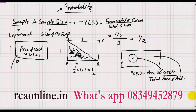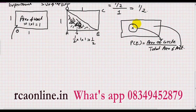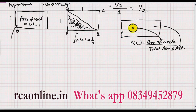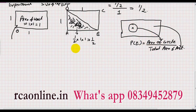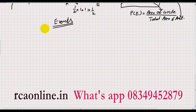Similarly, I discussed the circle example. If I have a circle inside a rectangular sample space and I want to know the probability of a ball hitting the circle, then the probability is the area of the circle divided by the total area of the rectangle.